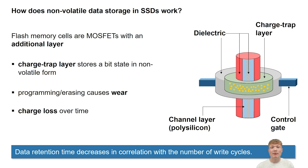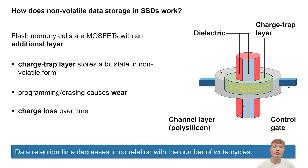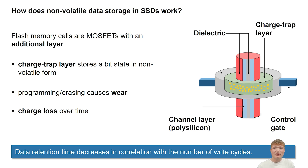Each time the cell gets programmed or erased, high voltages have to be applied at the memory cell. For example, to store a bit state of 0 and get electrons inside the charge trap layer, high voltages are applied to tunnel electrons through the oxide layer into the charge trap layer. Or conversely, to store a bit state of 1, high voltages are applied to get electrons out of the charge trap layer. These voltages lead to degeneration of the oxide layer, which ensures charge and bit state can be permanently stored. If the oxide layer degenerates, electrons can tunnel out and the stored bit state gets lost. So the more write and erase operations carried out on an SSD, the shorter the time for secure data retention gets.